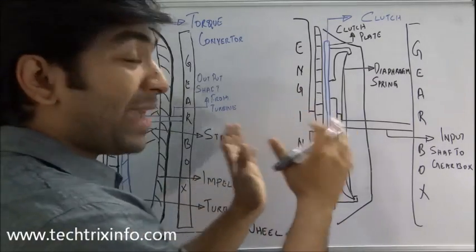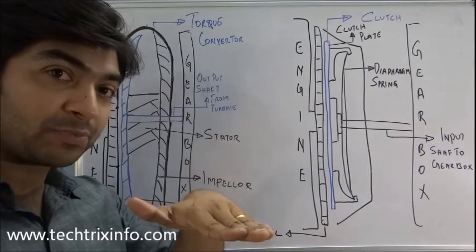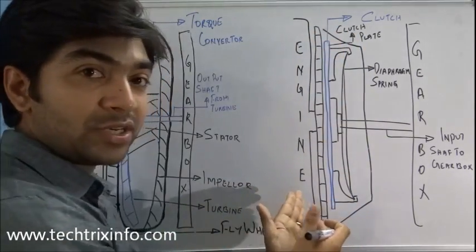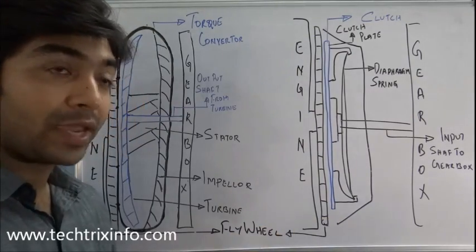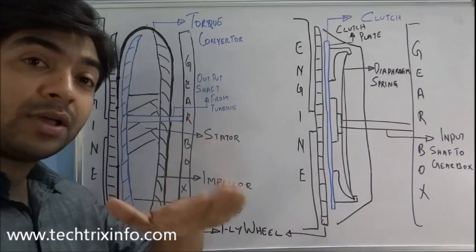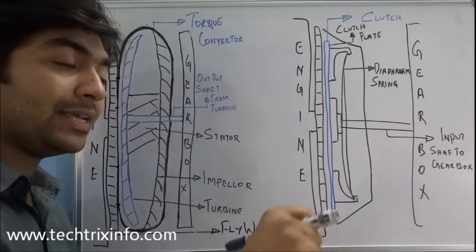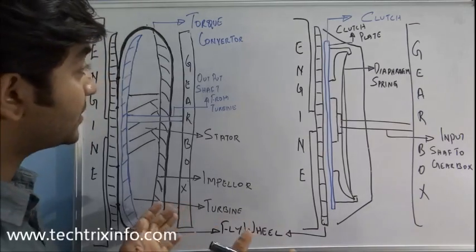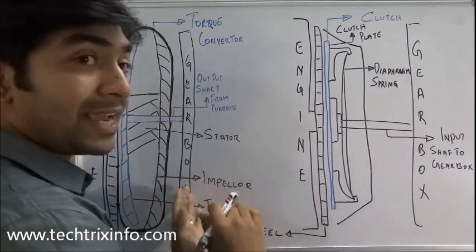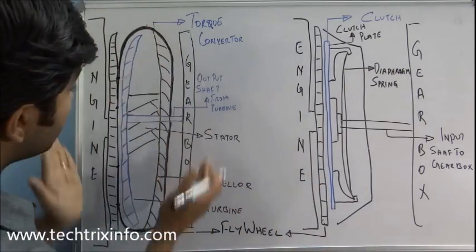When we drive a manual transmission vehicle and change gears, we need to press the clutch pedal to disengage the clutch from the engine. But when using a torque converter there is no clutch pedal — we can simply move the gears without any complication of a clutch. Let's see how they differ in working.